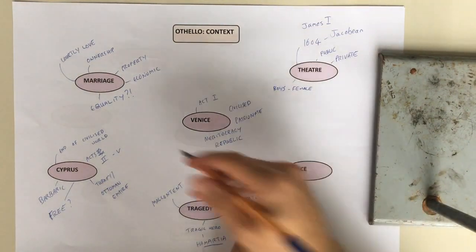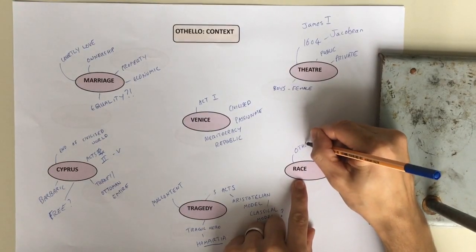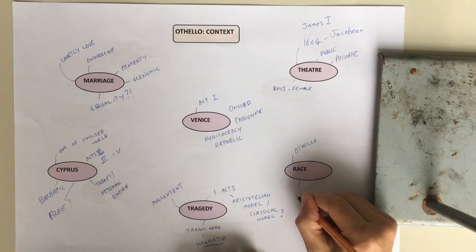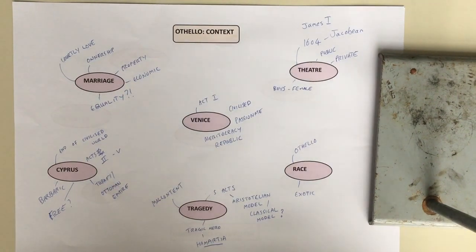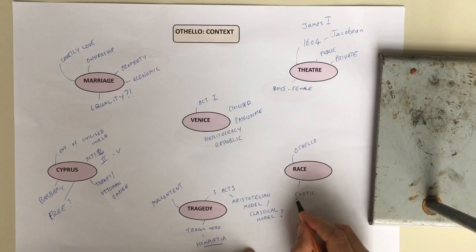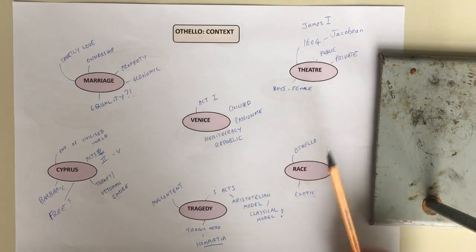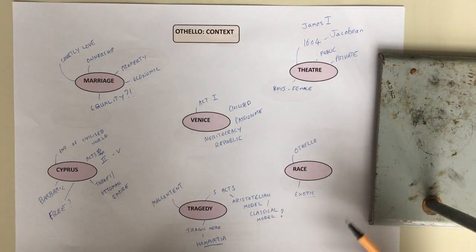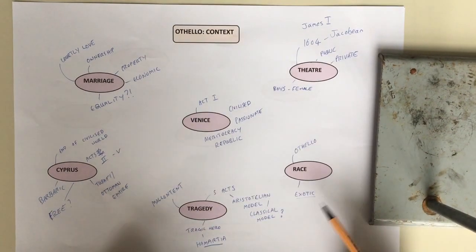We've just got race to do as well. So we've got Othello. Obviously race is a big question at the time, but essentially it's more a sense of being exotic. So in London at the time the play was performed, there were people from different countries. There were black people in London at this time, as well as people from the Middle East, but they were mainly ambassadors and tradespeople.